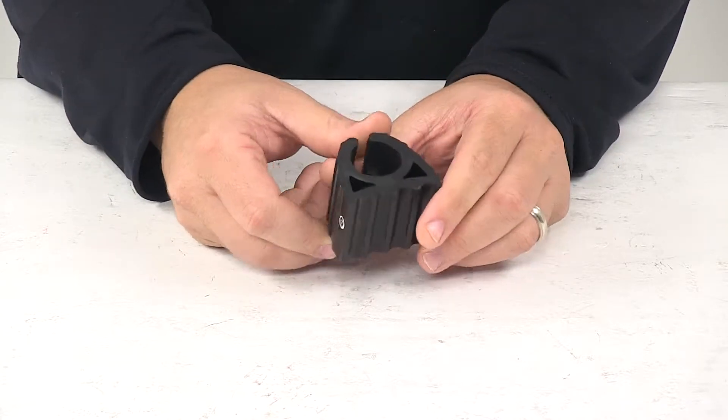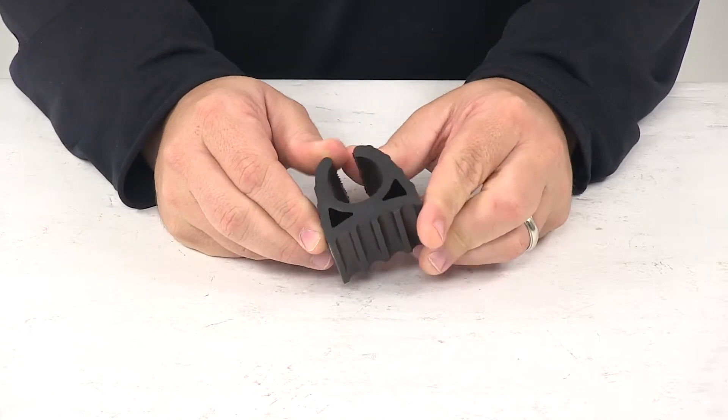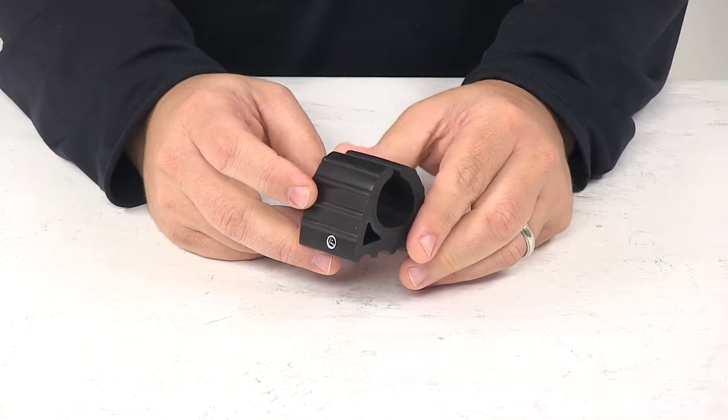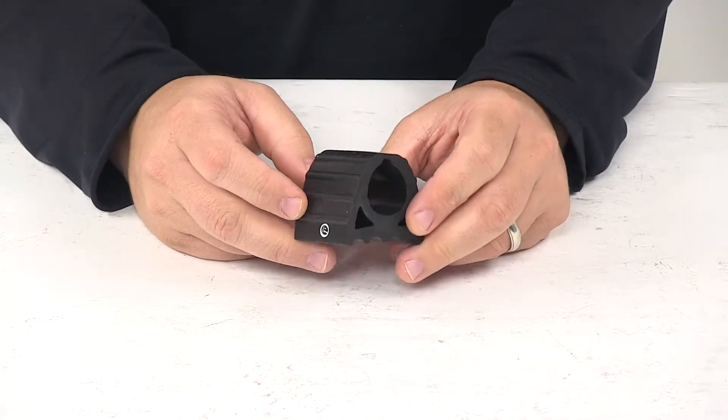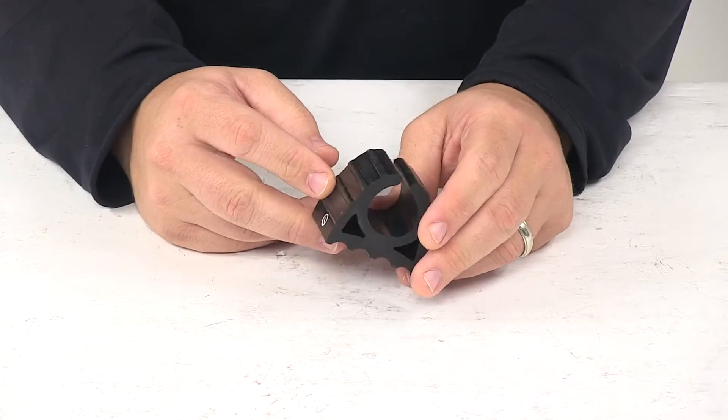It's a really nice design, it's made from a durable rubber construction and again it is designed for the Thule Spare Me Tire Mounted Bike Racks. Part number is TH963 and TH963XT.